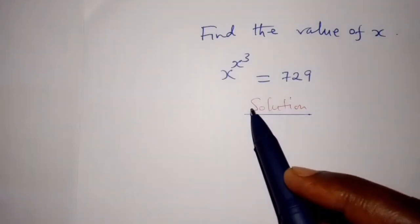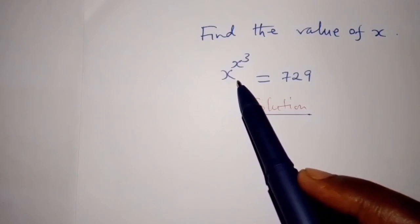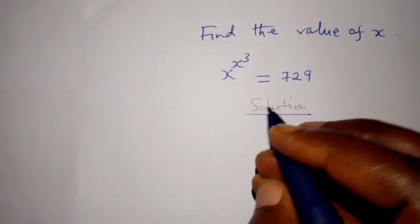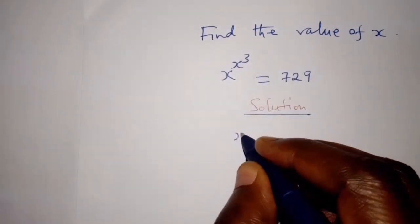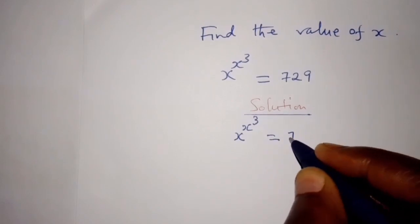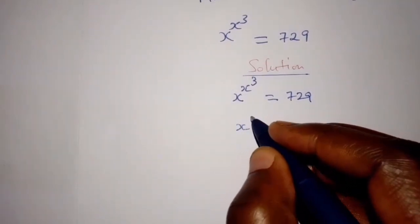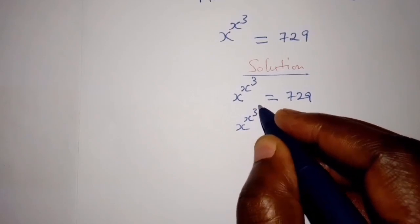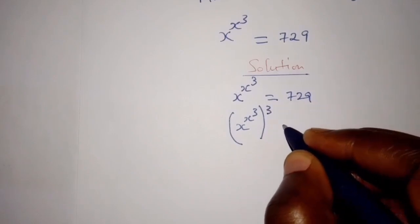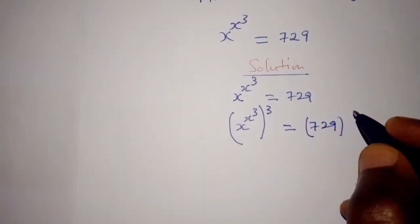We can solve this problem by raising both sides to the power 3. So we can express this as x power x power 3, raised to power 3, is equal to 729 raised to power 3.